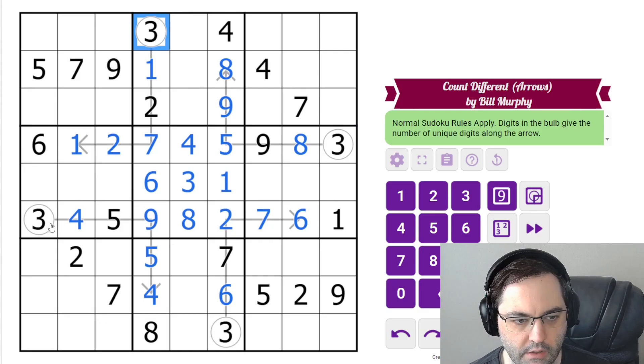Of course, we could have placed the three immediately because we had four threes looking at the central box. So we're done with the variant. Now it's just classic.